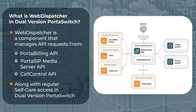Basically, web dispatcher manages API requests and regular self-care access in DualVersion portal switch. Web dispatcher serves as a single API entry point for both the source and the target systems. It accepts requests from external applications — for example, a CRM or custom-built software — portal to a portal billing API, portalSIP media server API, and call control API, and then dispatches them across the systems for further processing.